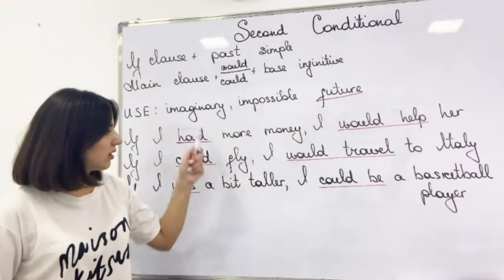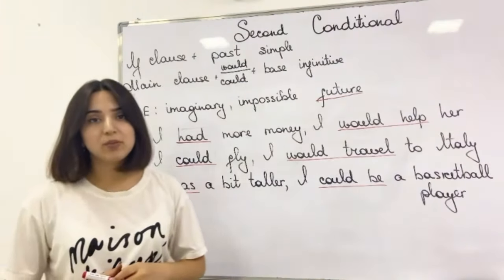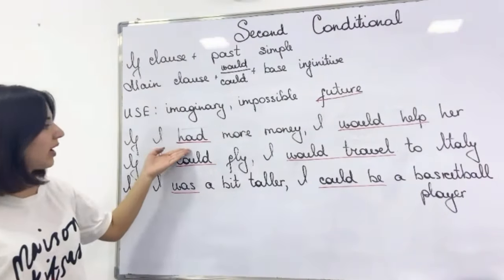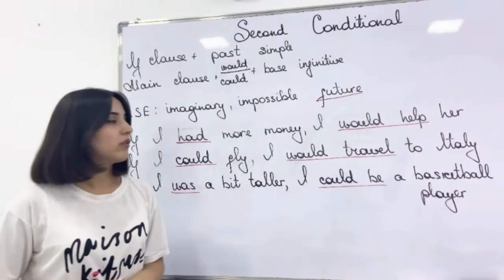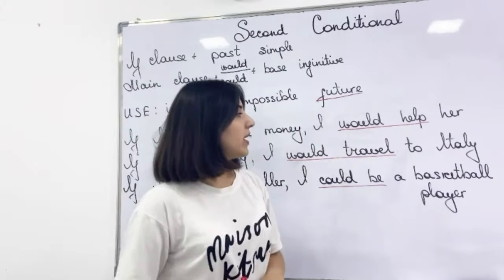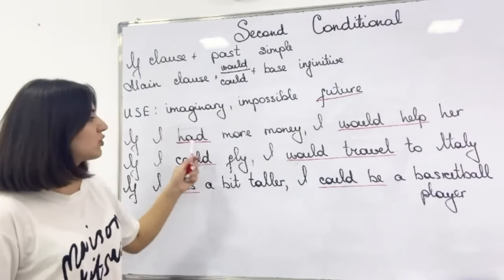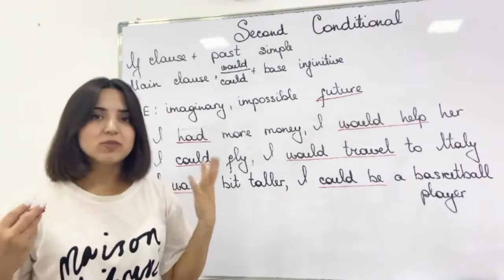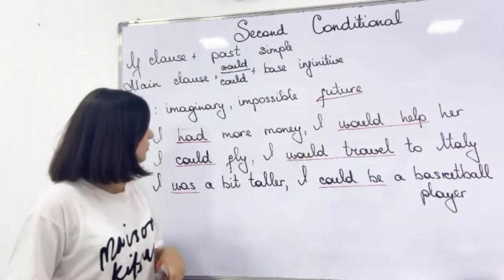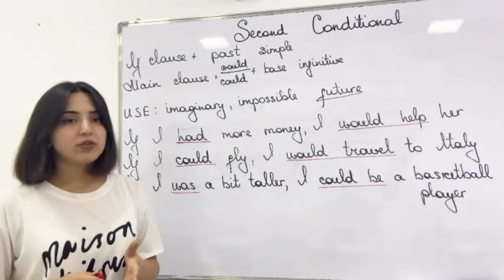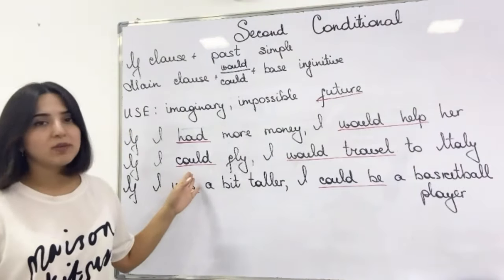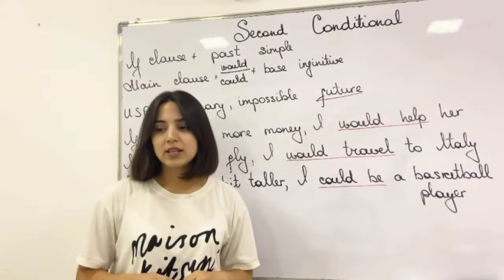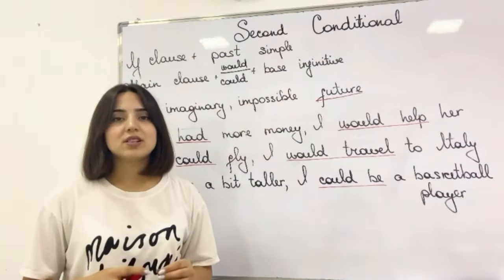Let's pay attention to these three simple sentences. The first one: if I had more money, I would help her. 'Had' is the past simple form, and I have used would plus base infinitive. So here I use my imagination — I don't have enough money to help that person, but I use my imagination: if I had money, I would help. The second one: if I could fly, I would travel to Italy. 'Could' is the past simple version of 'can', and would plus base infinitive. So it is something that sounds impossible to happen in the future. As a human being, we can't fly — we do not have wings. That's why it's impossible future.